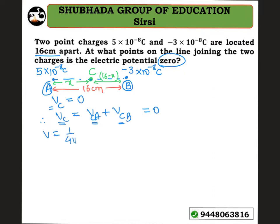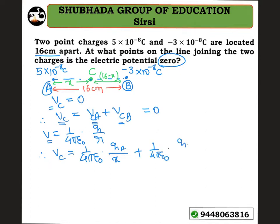We know that potential V equals 1 divided by 4 pi epsilon naught into q divided by r. Therefore, potential at C equals 1 over 4 pi epsilon naught into qa divided by x, plus 1 over 4 pi epsilon naught into qb divided by 16 minus x, and that must equal zero.